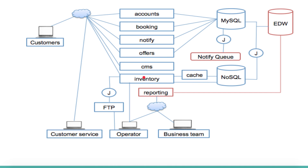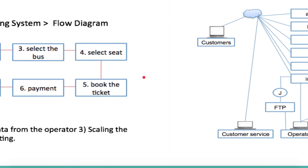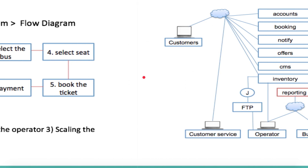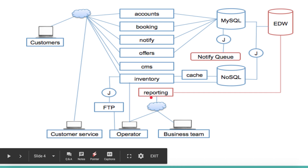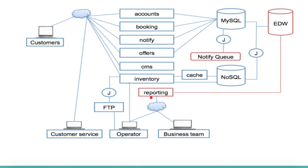Now let's talk about analytics and reporting. The business team interacts with the system to understand what is happening with the data. They generate reports based on number of tickets booked, cancellations, and other metrics. All our data in MySQL, or NoSQL for inventory, is parsed through jobs and sent into the Enterprise Data Warehouse, where the business team can query it to get relevant information and make sure the business is running as expected.